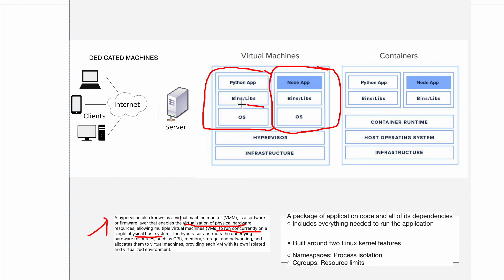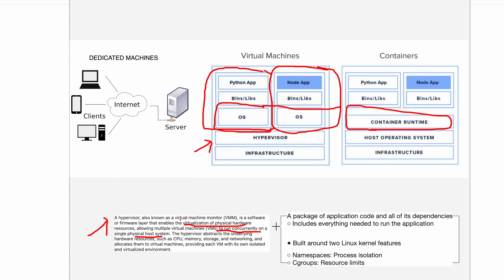If one VM crashes, it should not cause a crash in another OS, and it should not be able to access the in-memory data of another VM. They are isolated and safe because they cannot access each other's memory space. However, the problem with this approach is that you still have to have the entire OS installed for as many virtual machines as you have, which over-utilizes resources and slows down the host machine.